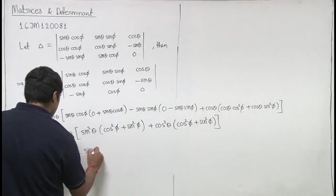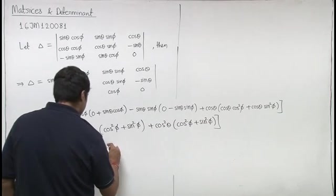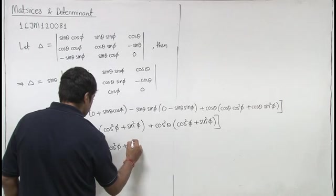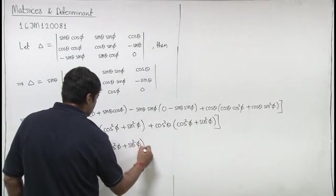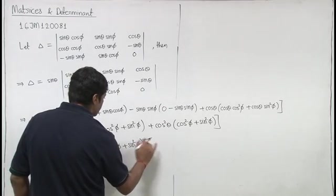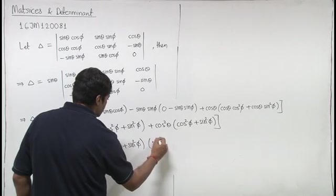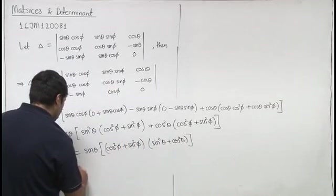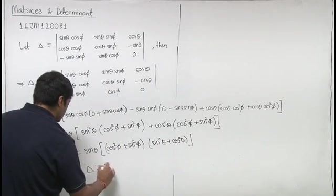So, delta will be sin theta into sin square theta plus cos square theta, so, finally, delta is sin theta.